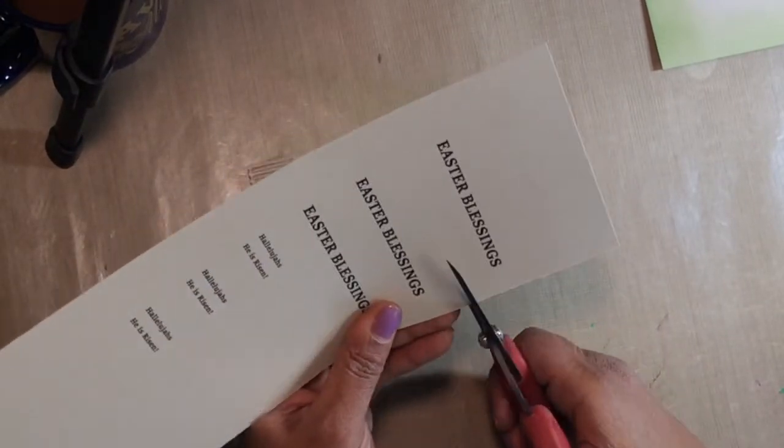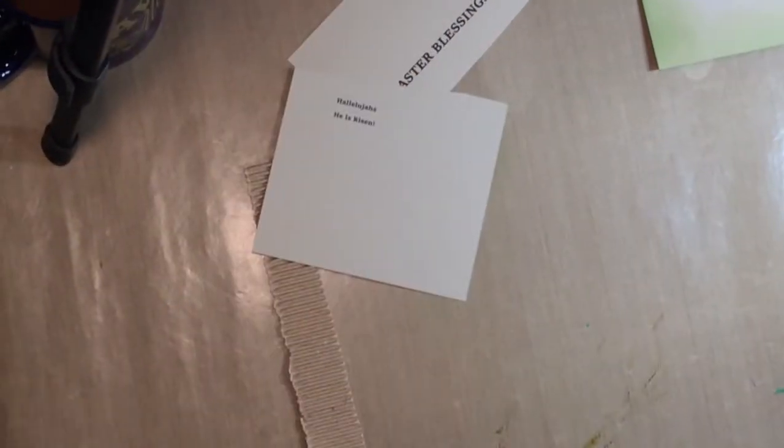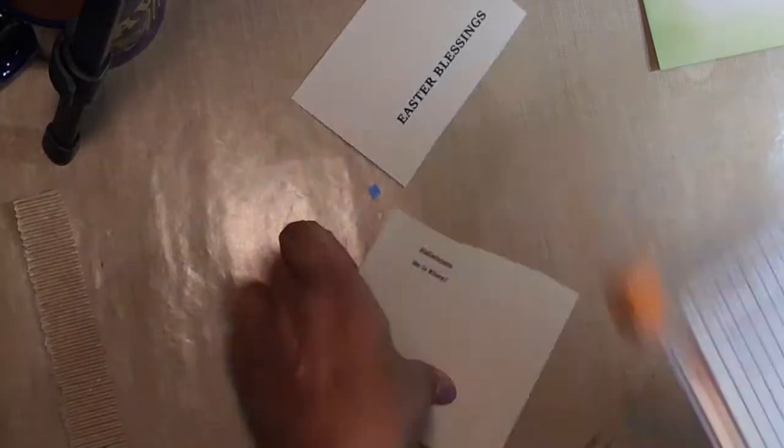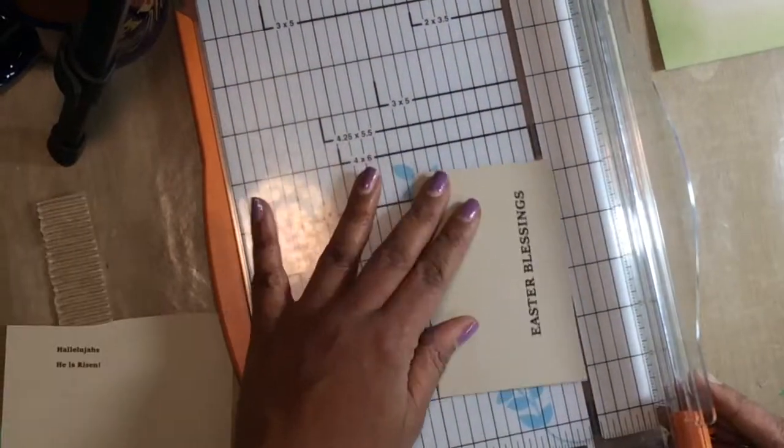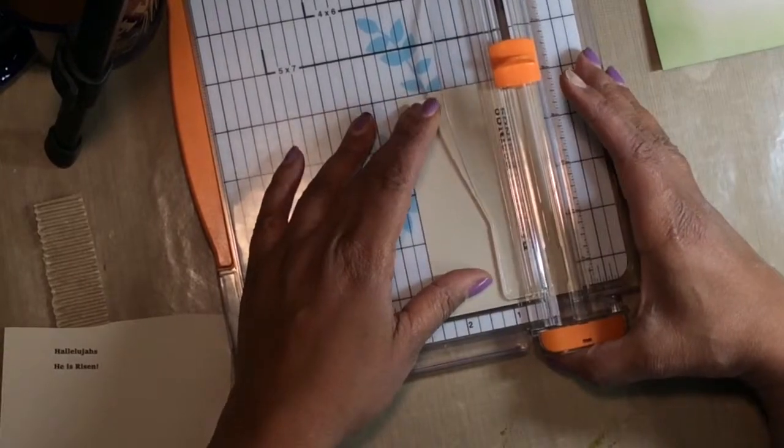So now I have a piece of corrugated cardstock, you know, the kind that like Starbucks uses to put around the cup to keep your hands from getting hot. And I'm cutting out the sentiments that I printed out earlier. I'm just cutting them down to size before I apply them to the card.